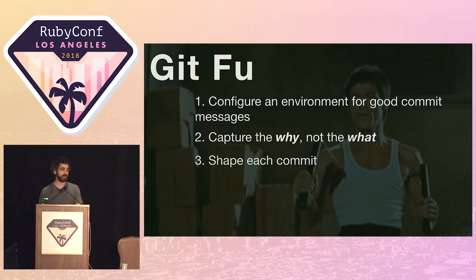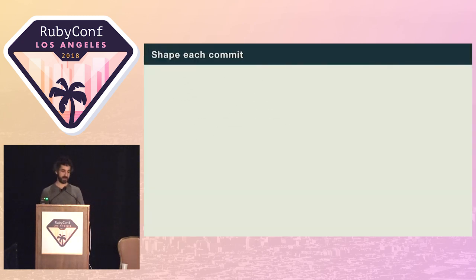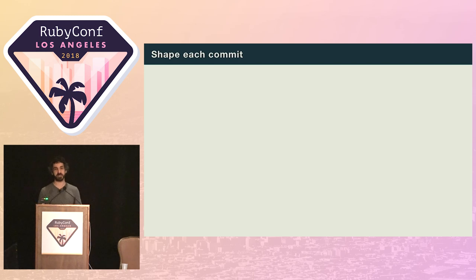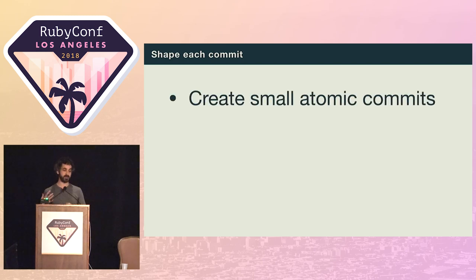Thirdly, think carefully about the shape of each commit. In the story, for Josie, this meant collapsing everything down into one commit — but the message you should take from that is not that everything should just be one big commit. That was done mainly to keep the story easy to follow. Instead, focus on creating small, focused, and atomic commits that just do one thing.